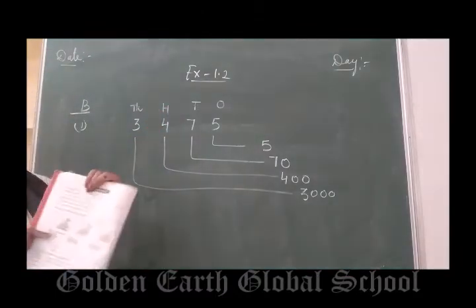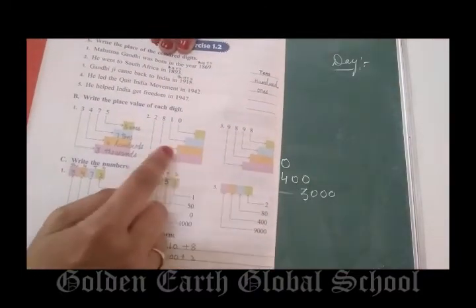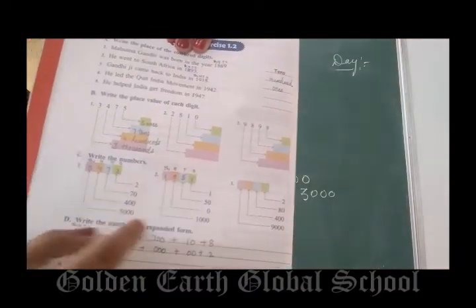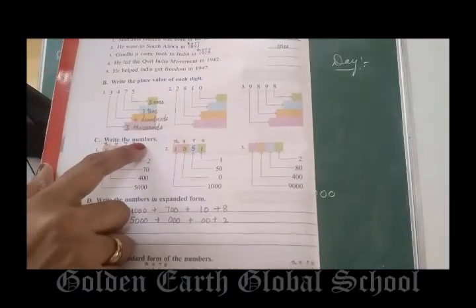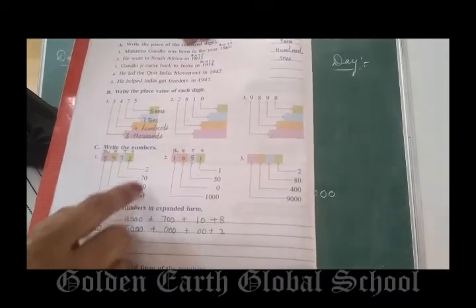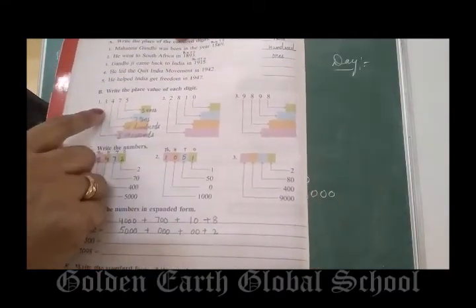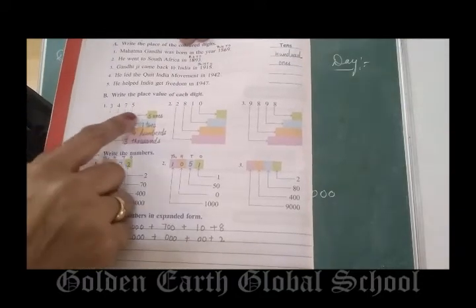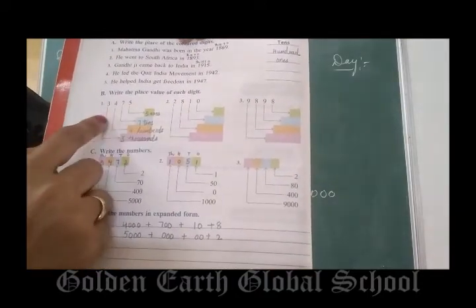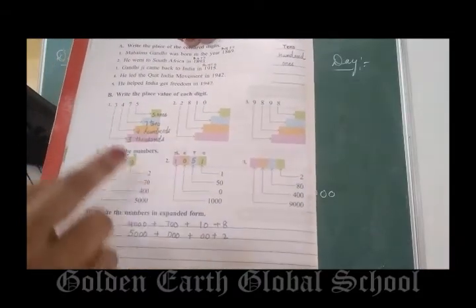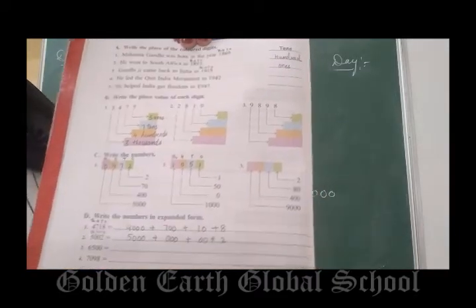Question number 2 and 3, you will do yourself. Come to Part C: write the number. Now you have place values given and you have to write the number. In Part B, you had the number given and you had to write the place value. Here, the place value is given and you have to write the number.